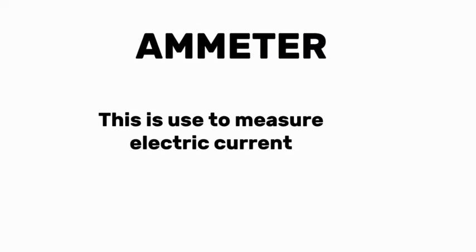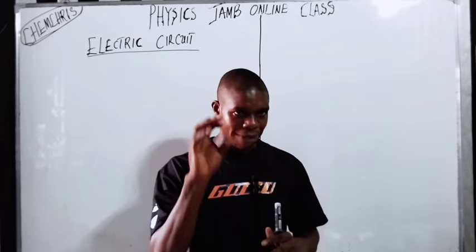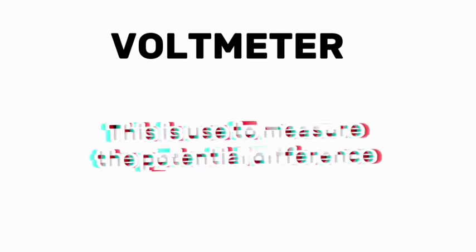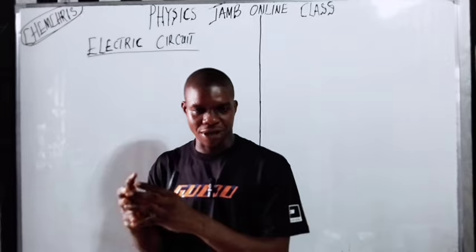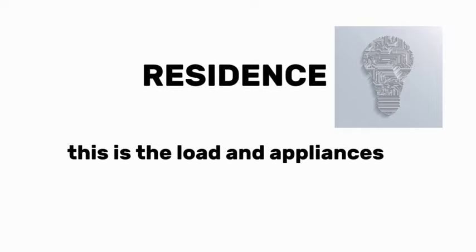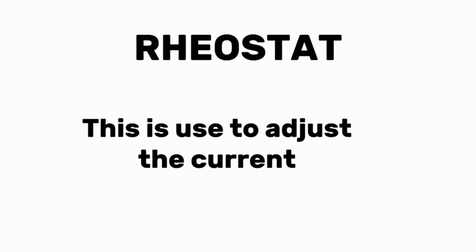Number three is called the ammeter. The ammeter is used to measure current in the electric circuit. The next one is called the voltmeter. The voltmeter is used to measure potential difference. Potential difference is work done per unit charge. Then the next component is called resistance or resistors — this is the load, like lights or anything you connect to a circuit. There is also the rheostat, which is used to adjust the current.